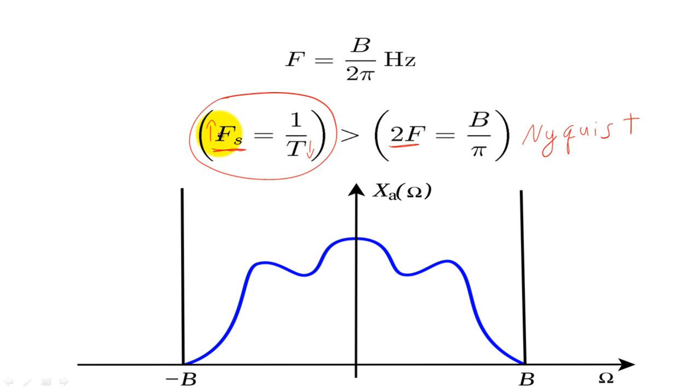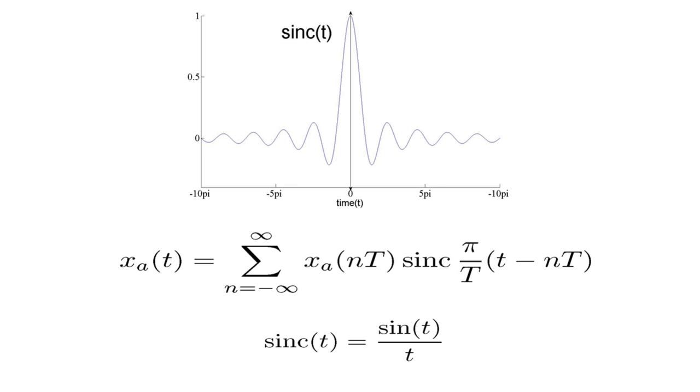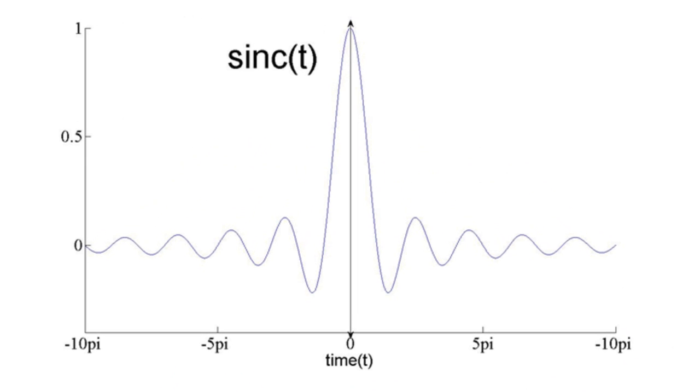Typically, we want to sample at a higher frequency than the Nyquist frequency. If we have sampled at or above the Nyquist frequency, we can perfectly recreate the analog signal X sub A of T by multiplying every sample by a sinc function centered on that sample and adding the resulting sinc functions together. The sinc function is defined as the sin of T divided by T where the sinc function equals 1 when T is 0.